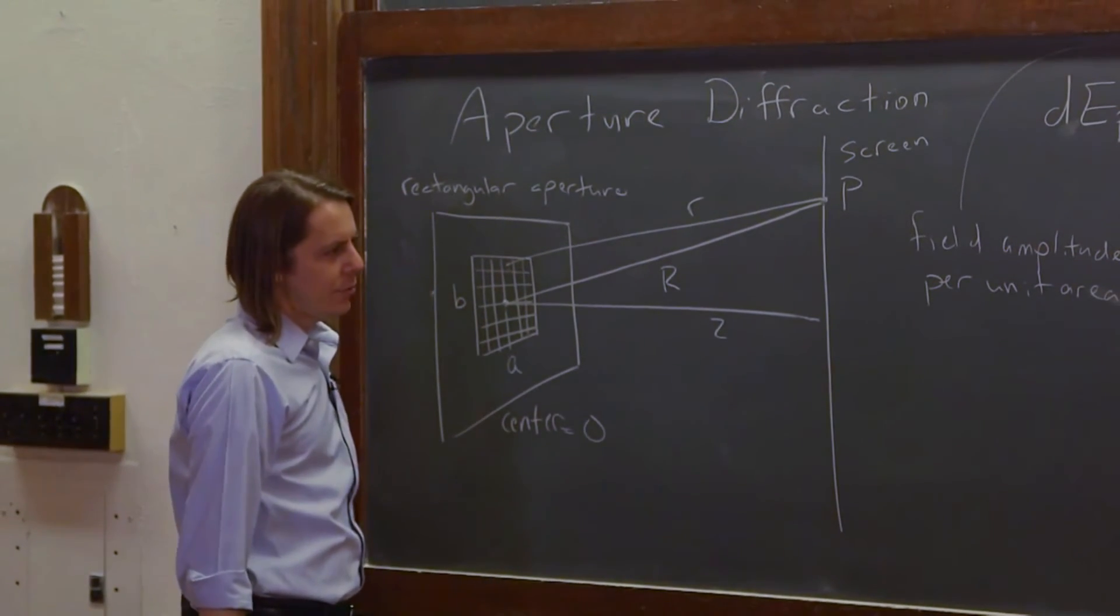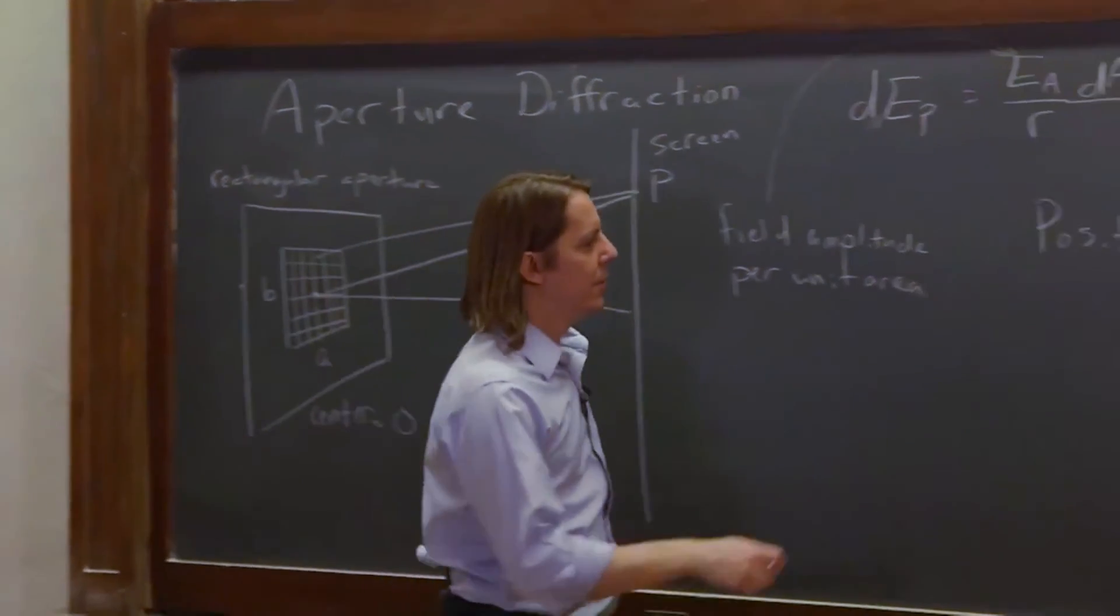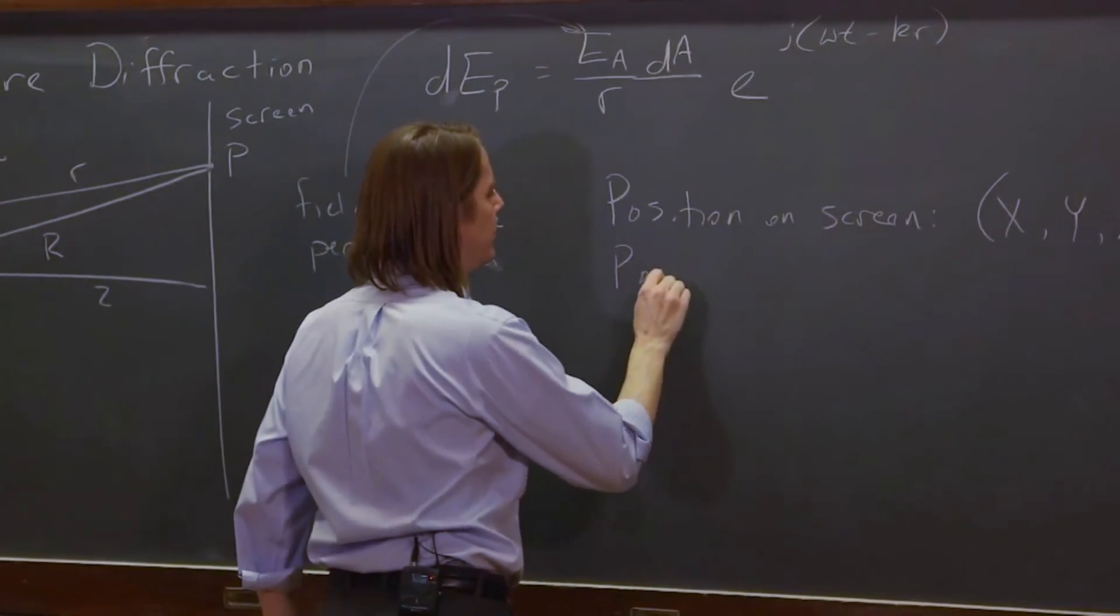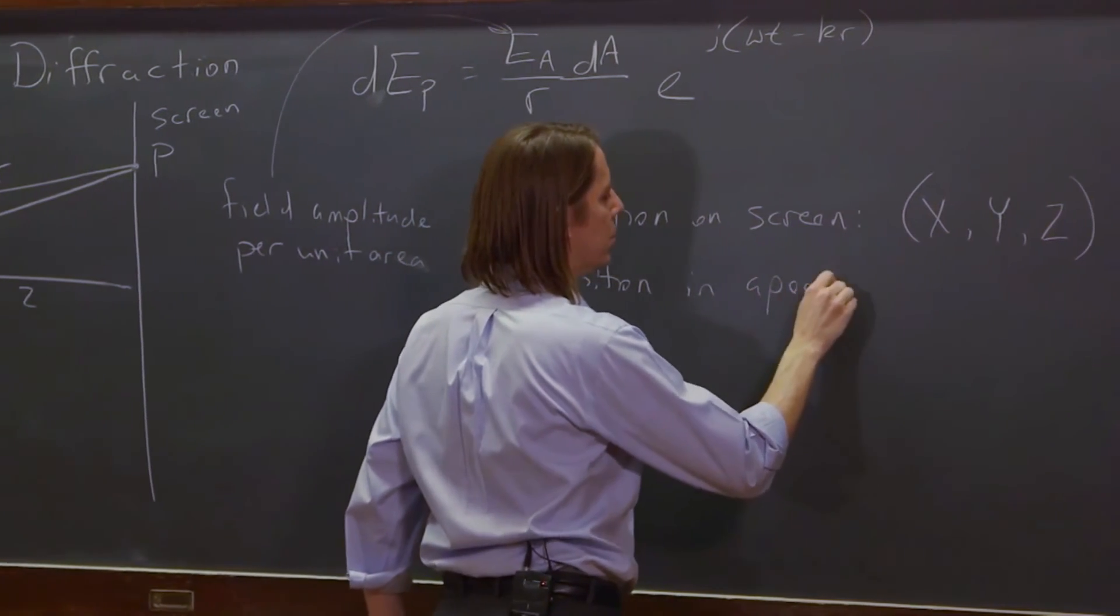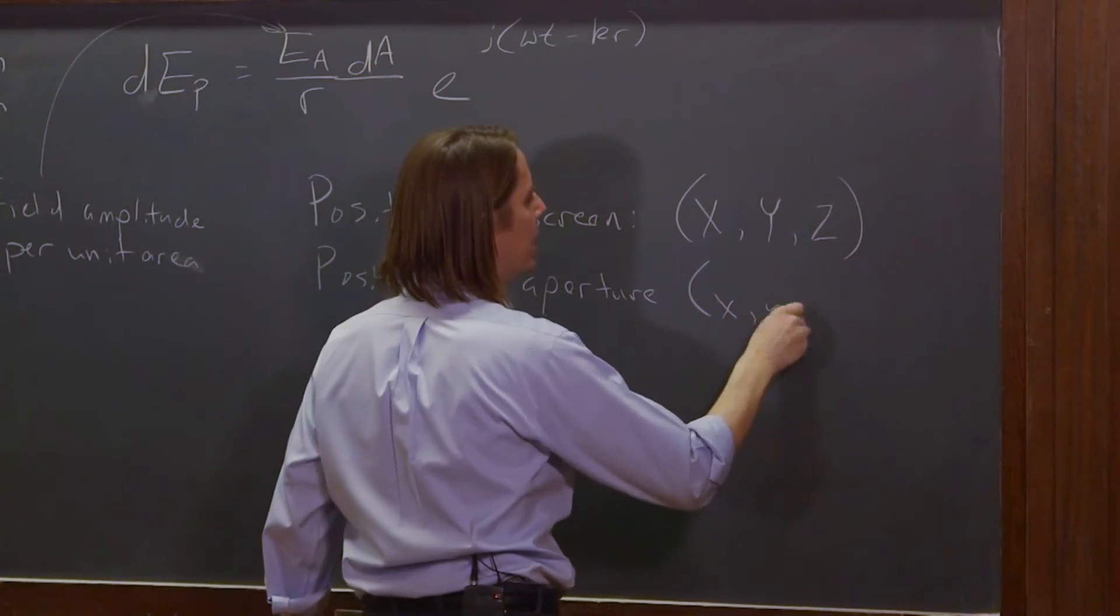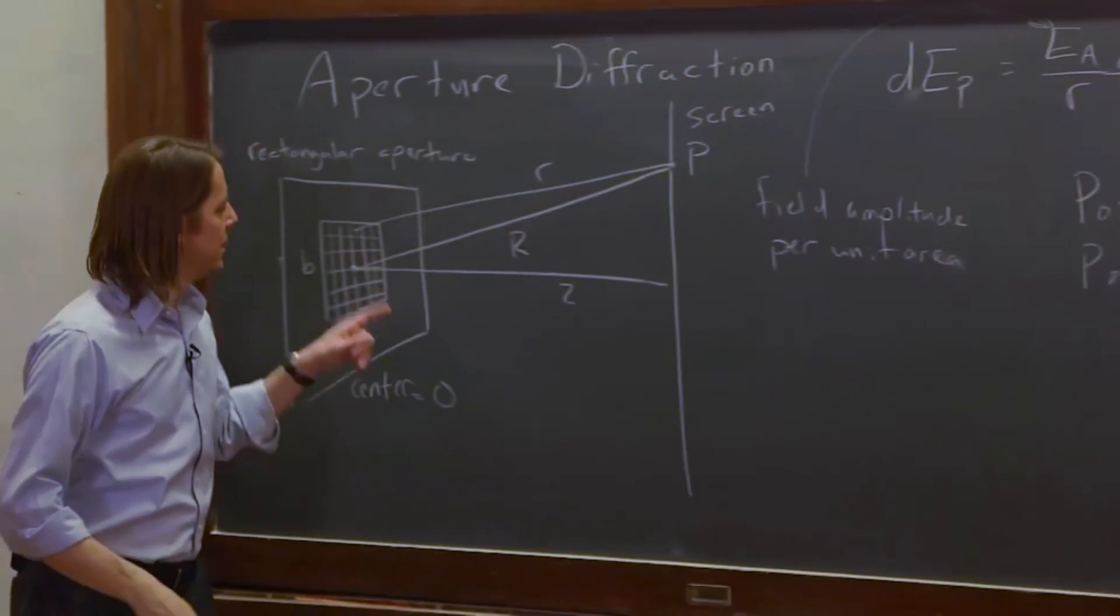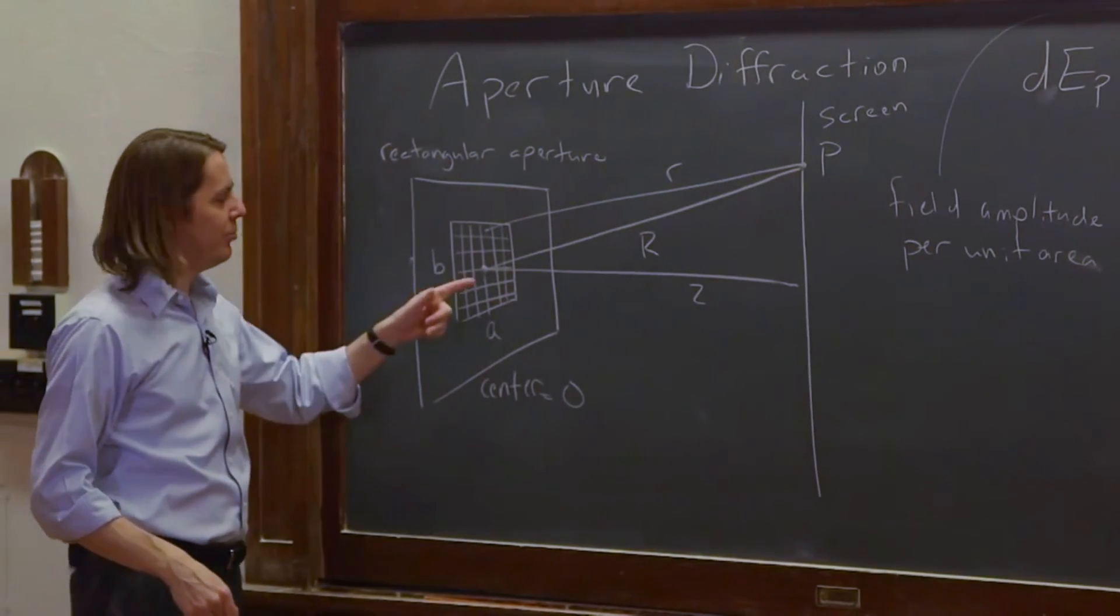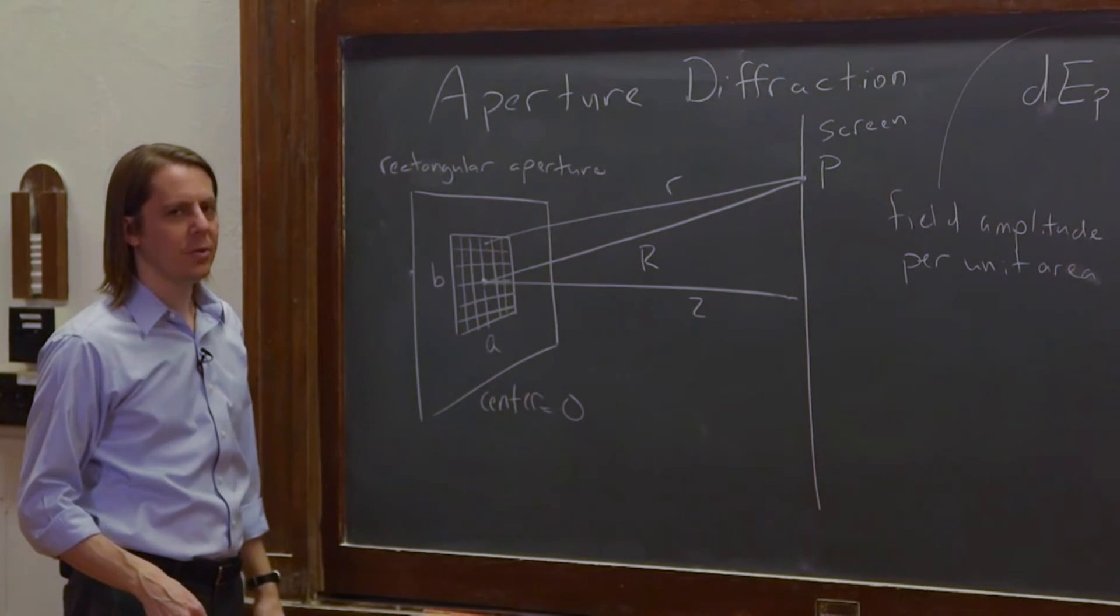And if we're thinking about the position in the aperture, we're going to use little x, y, z. Position in the aperture is x, little y, and actually zero. Because the origin sits in the middle of the aperture. So as you move around in that plane, little z is always zero. So we have those two positions.